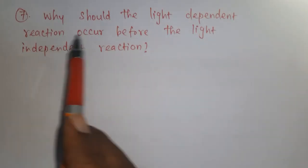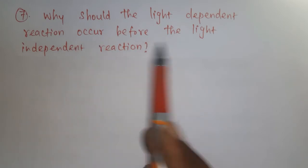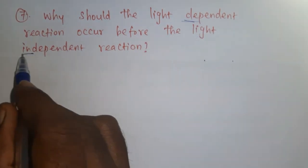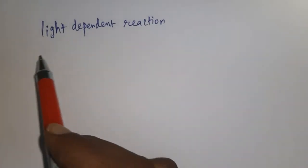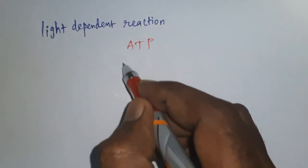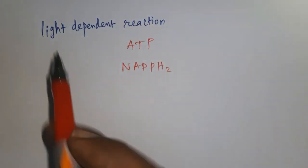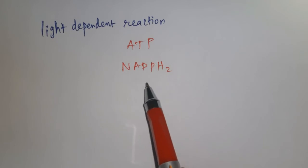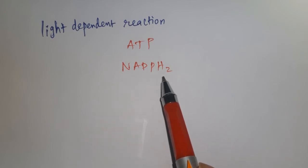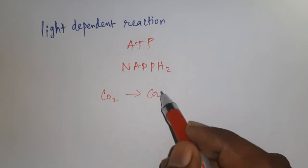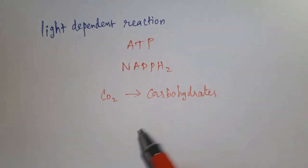Question number seven: why should the light-dependent reaction occur before the light-independent reaction? At the end of the light-dependent reaction, ATP (adenosine triphosphate) and NADPH2 (nicotinamide adenine dinucleotide phosphate) molecules are formed. These molecules are used to convert CO2 into carbohydrates such as sugar and starch.